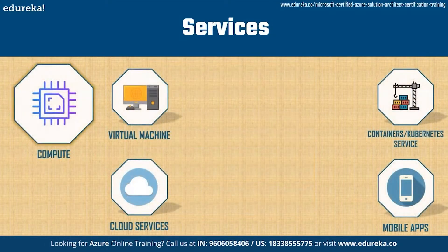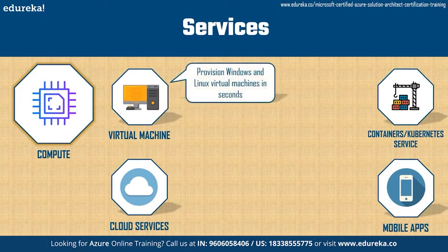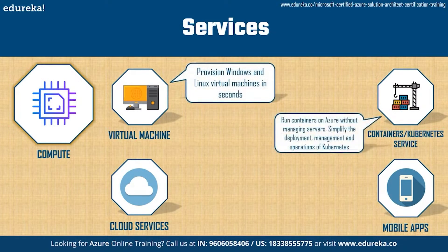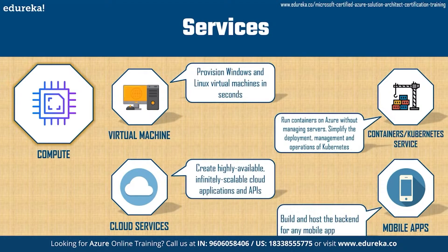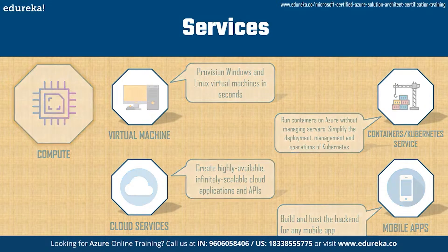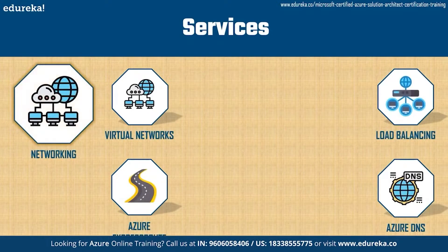The first product John needs is compute. He can use this to deploy and manage virtual machines, containers, and batch jobs, as well as support remote application access. Compute resources in the cloud can be configured with either public or private IP addresses depending on whether the resource needs to be accessible to the outside world. Services within compute include virtual machines, containers, Kubernetes service, cloud services, and mobile apps.